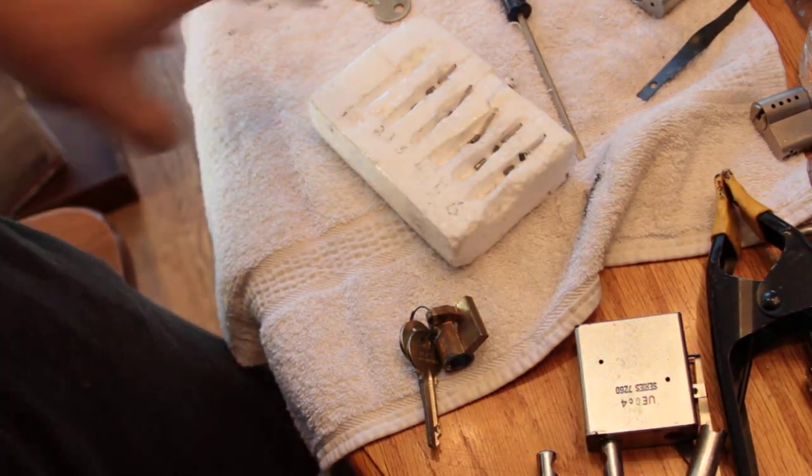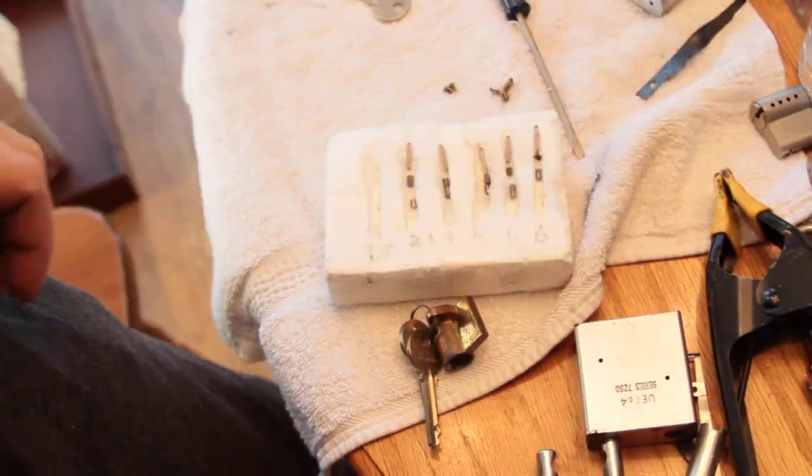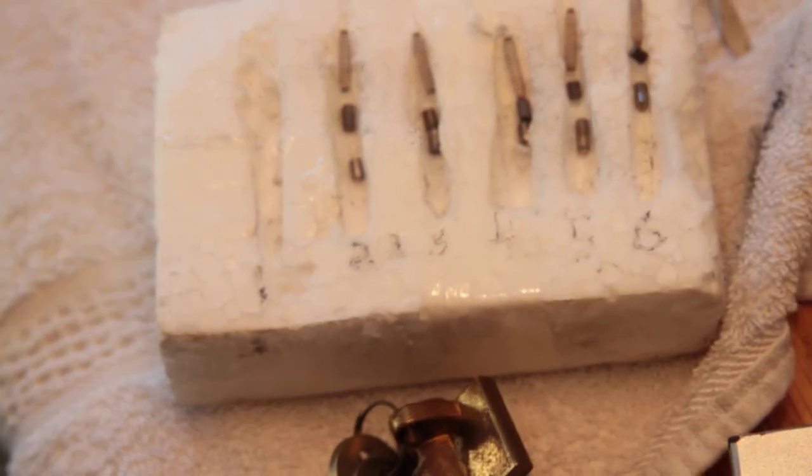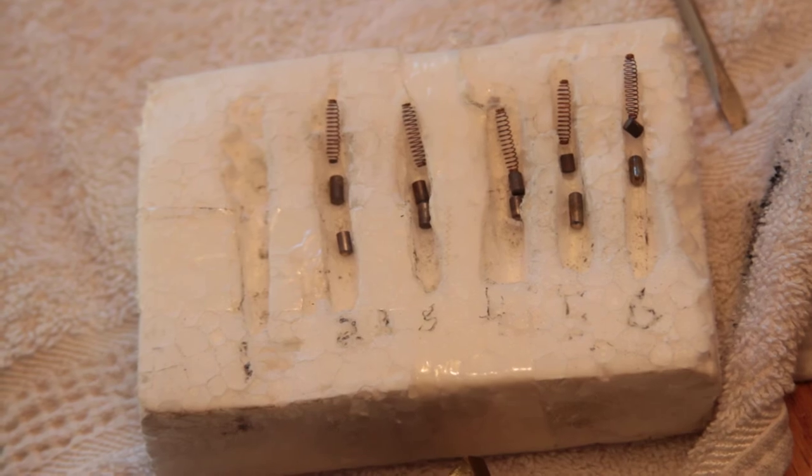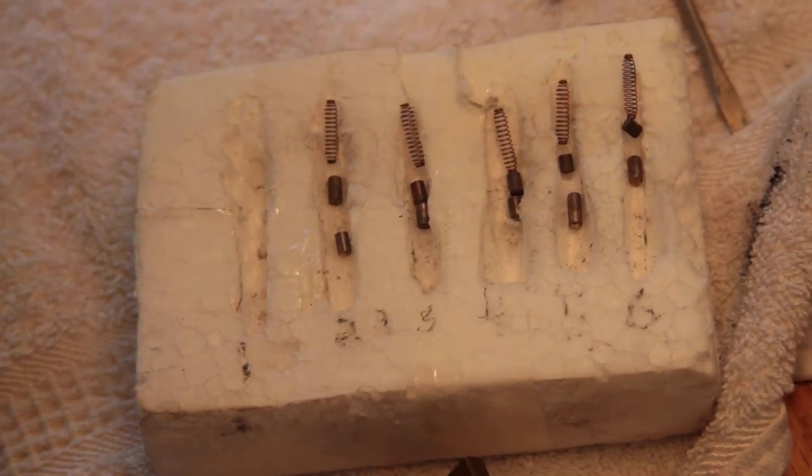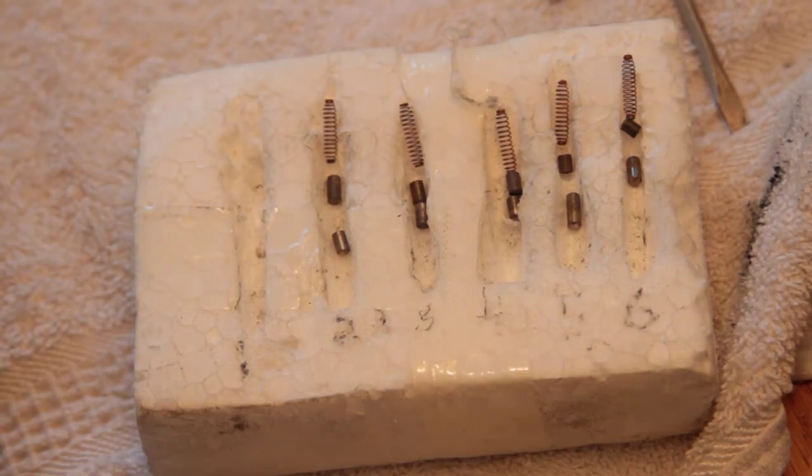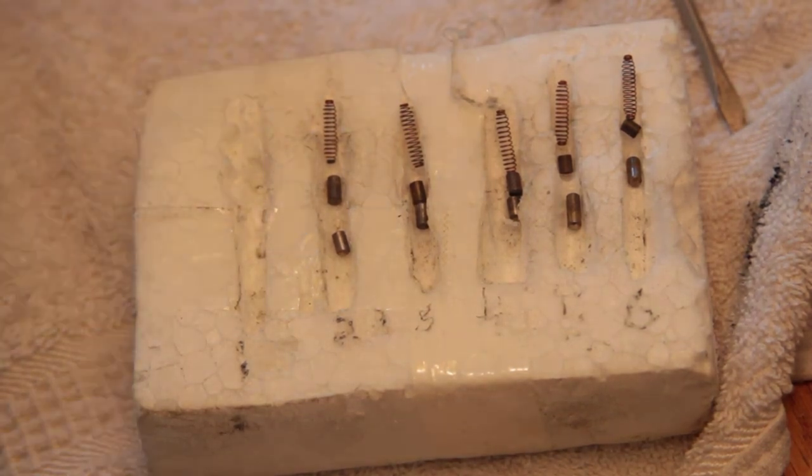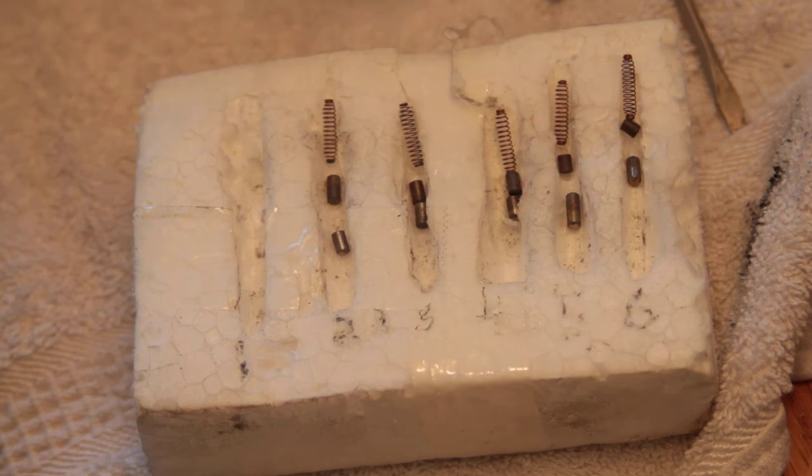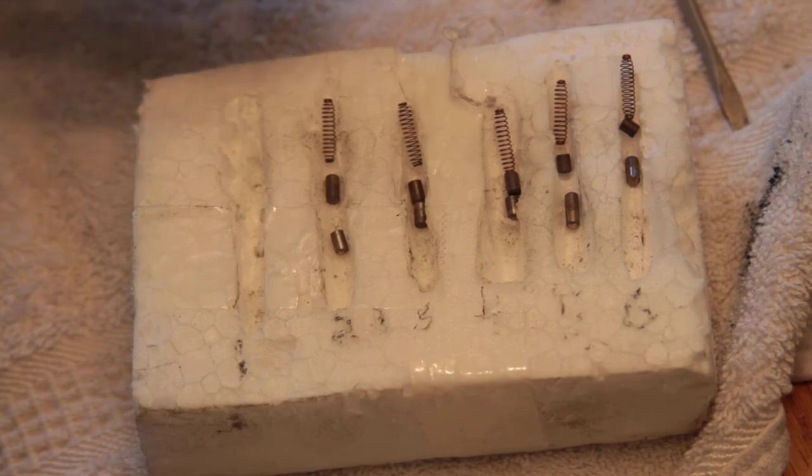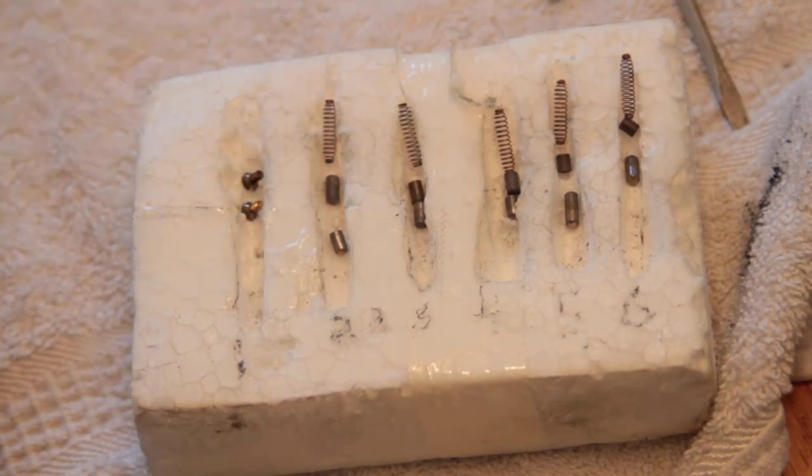So, funny little mailbox lock. There's the pins. Completely unimpressive. So, no steel, no anti-drill, no nothing. Even the screws aren't ferrous. So, screws appear to be brass, actually.